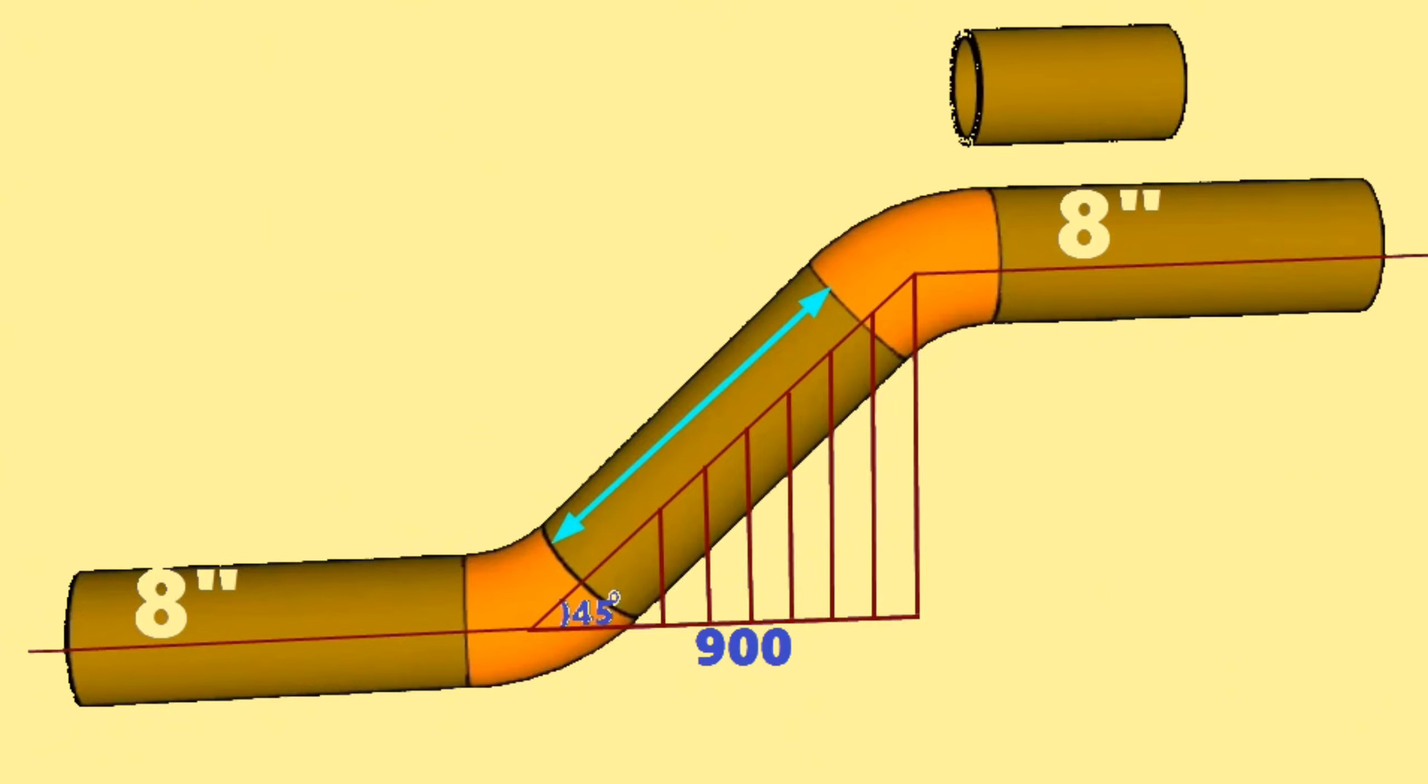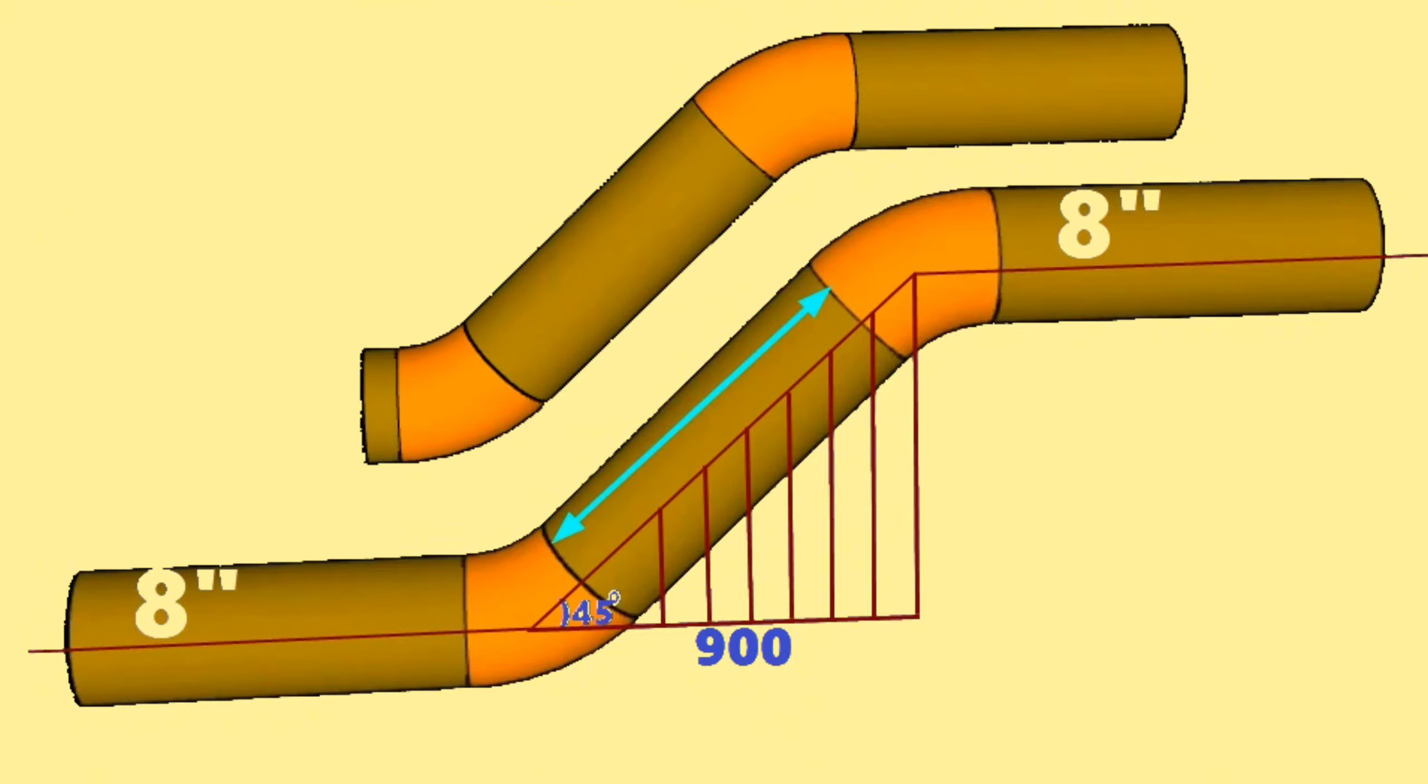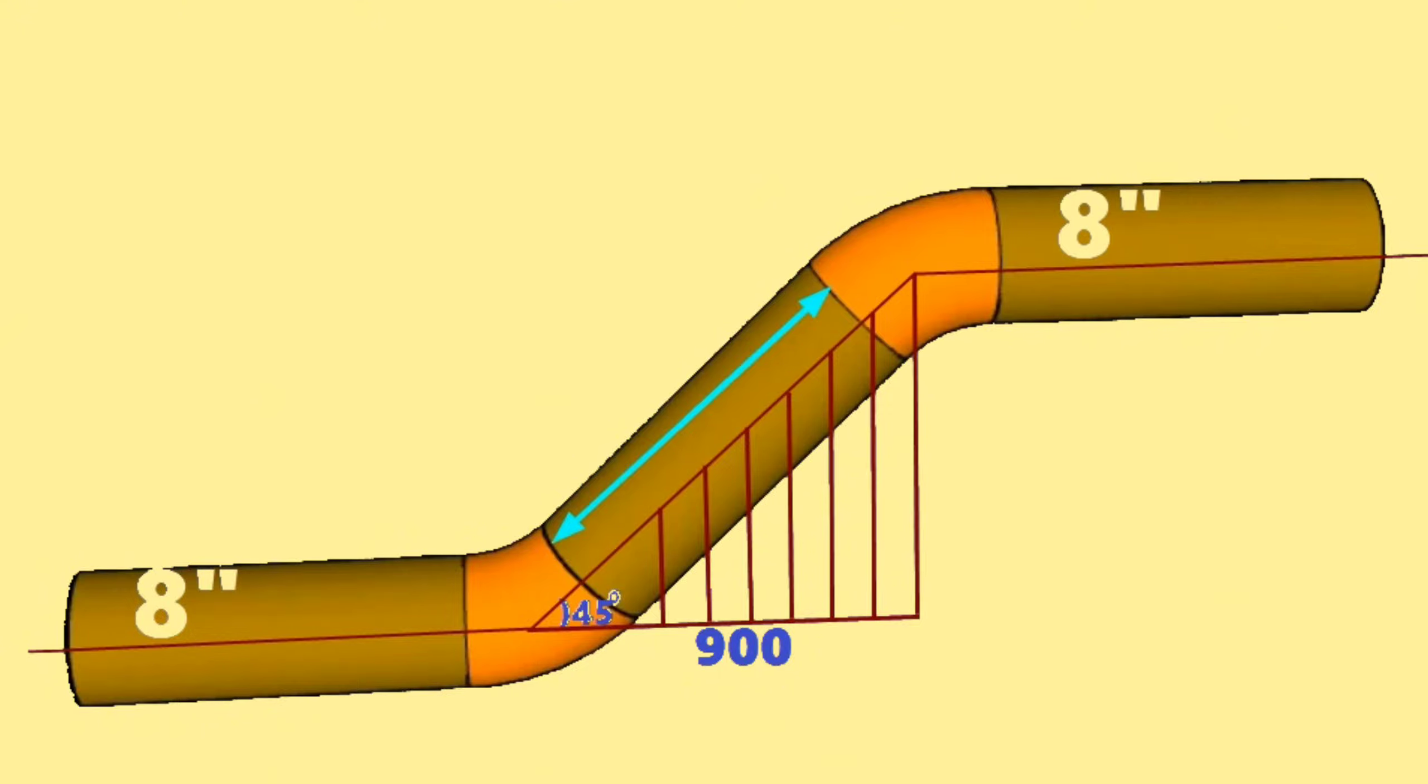As you can see, the 8-inch pipeline comes horizontally, then goes down at a 45-degree angle and continues horizontally. We are required to calculate the length of this piece of pipe used between two 45-degree butt weld elbows in this pipeline.